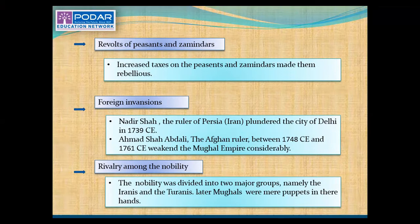Foreign invaders also contributed to the decline. Nadir Shah, the ruler of Persia, plundered the Mughal Empire considerably in 1739 CE. Ahmed Shah Abdali, who ruled between 1748 and 1761 CE, weakened the Mughal Empire considerably. As a result, the mighty Mughal Empire was reduced to a small district around Delhi.